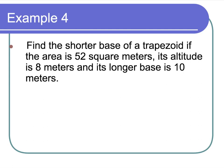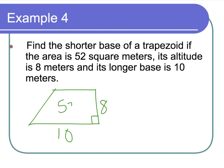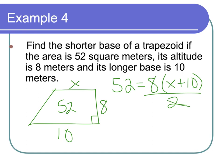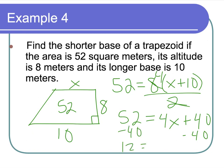Find the shorter base of a trapezoid if the area is 52 square meters, its altitude is 8 meters, and its longer base is 10 meters. I'll draw a trapezoid; the longer base is 10, the altitude is 8. Area equals height times (base 1 plus base 2) all over 2. Simplifying, I get 52 equals 4 times (10 plus x). Distributing gives 52 equals 40 plus 4x. Subtracting 40: 12 equals 4x, so x equals 3. My shorter base is 3 meters.